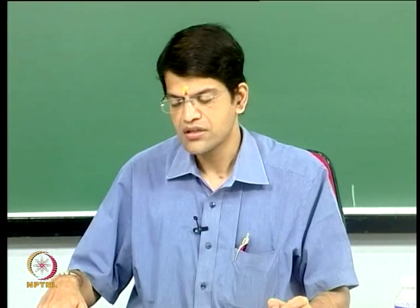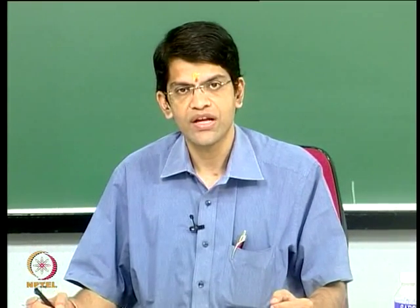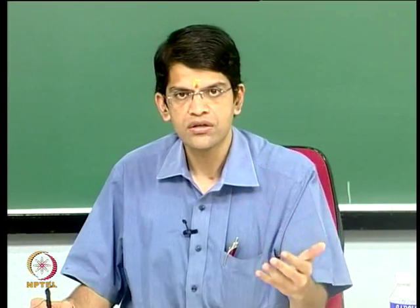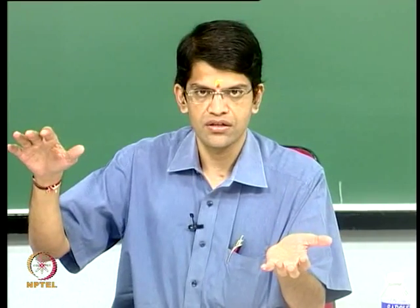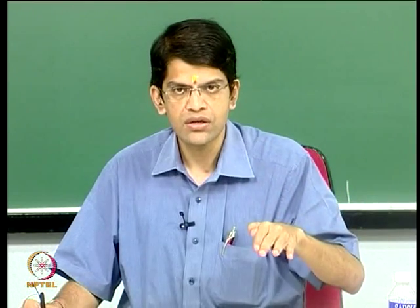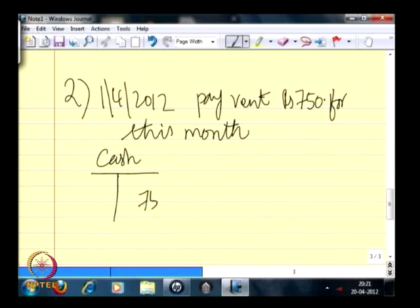Contrary to the previous example, in this transaction cash of ₹750 has been paid — cash has gone out from the entity. The cash has gone down by 750. Cash is an asset item and because of this transaction it has reduced — any asset decrease is on the right hand side, so that is a credit of 750. This is transaction number 2. The corresponding debit entry is 750.